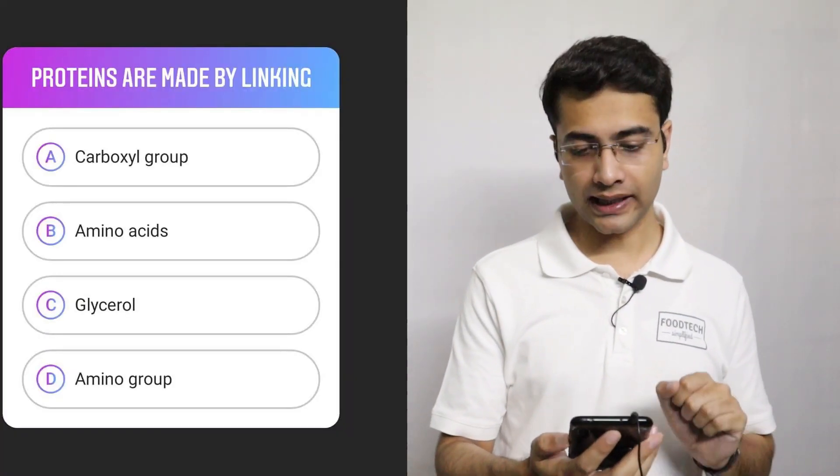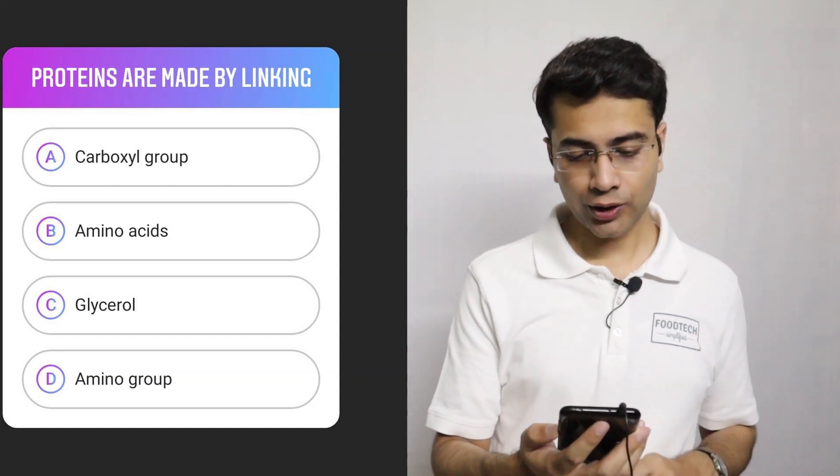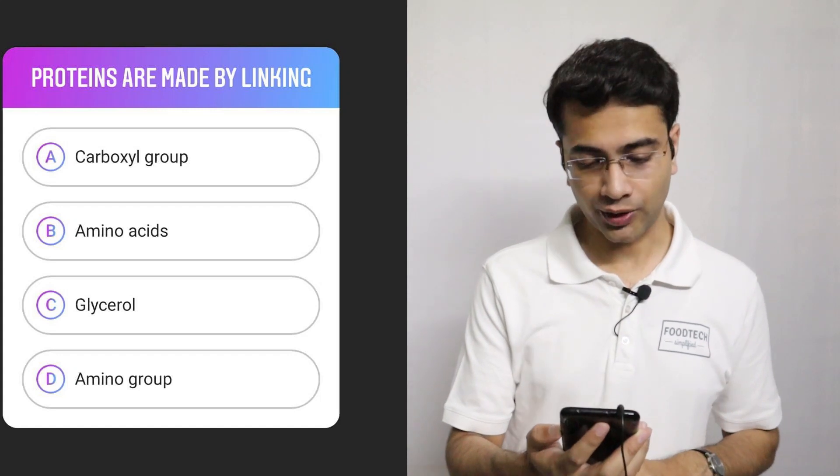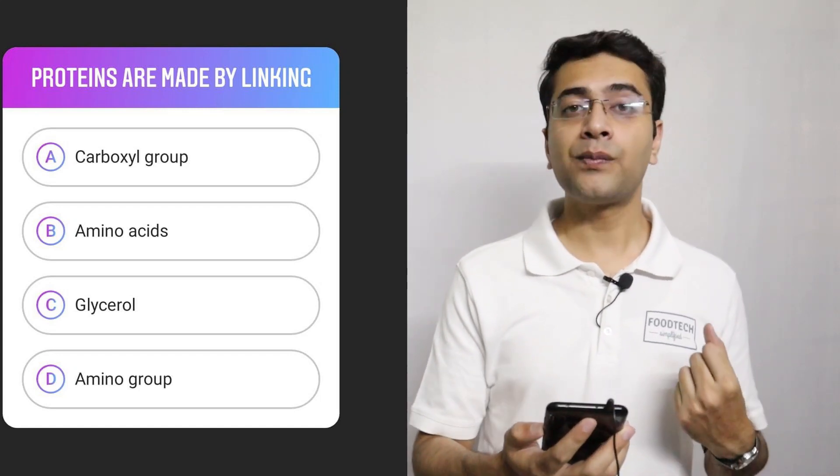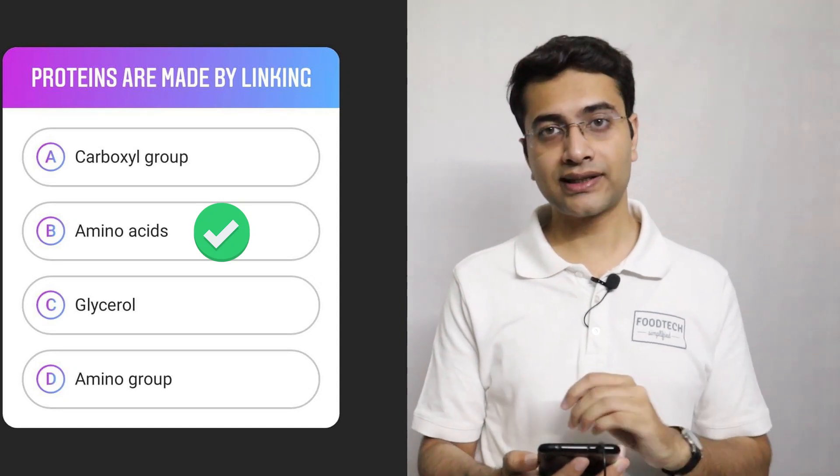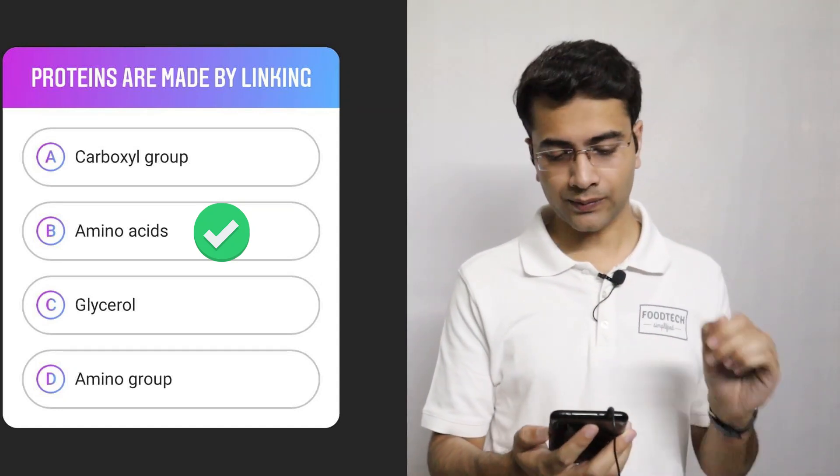The first question is proteins are made by linking. Option A carboxyl group, option B amino acids, option C glycerol group, option D amino group. So proteins are polymers of amino acids. If you combine amino acids, you will get a protein.